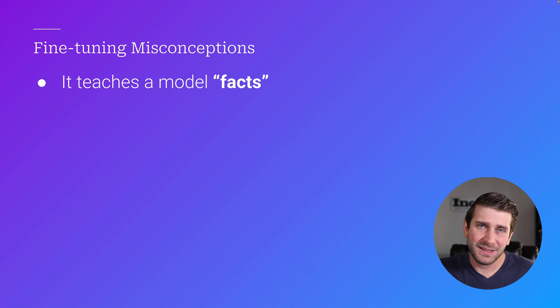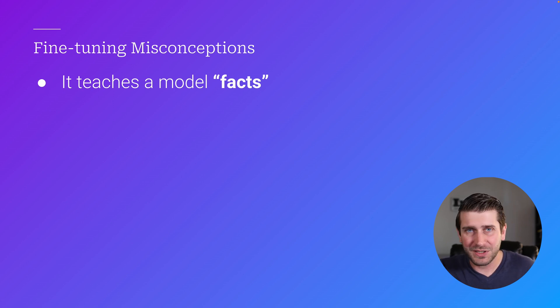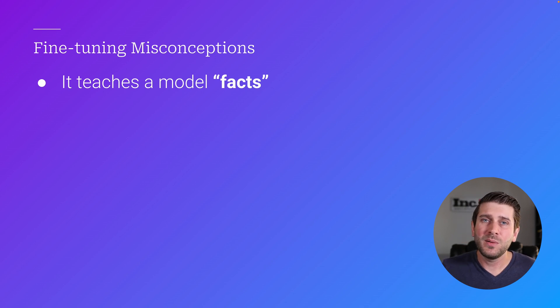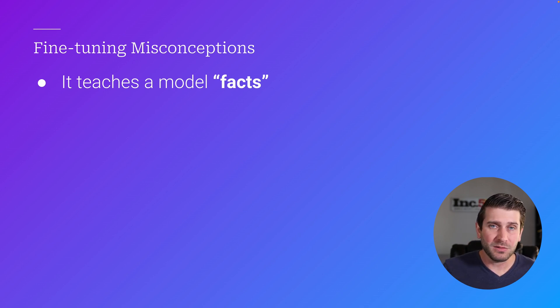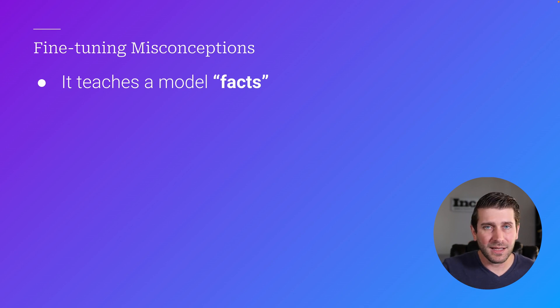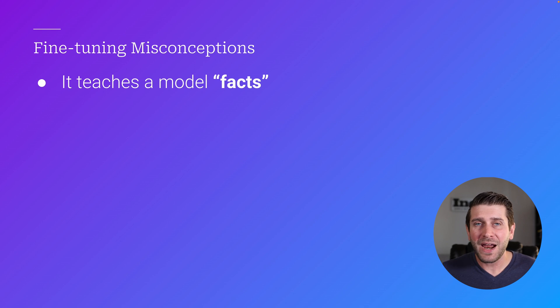Unfortunately, there are a lot of misconceptions floating around the internet about fine-tuning. People think that fine-tuning teaches a model facts. As we discussed, models don't really store facts — they store probabilities. So while you might incidentally get back bits and pieces of your training data, it's not guaranteed functionality. If you want the model to reference facts, the best way to do that is to provide it in the context window using a technique like RAG or any kind of knowledge retrieval.